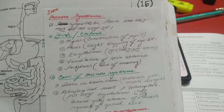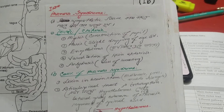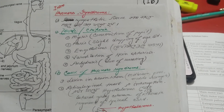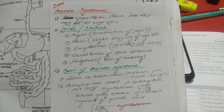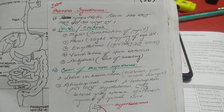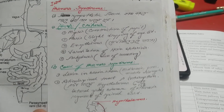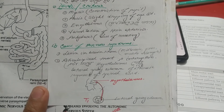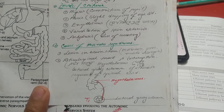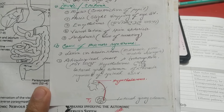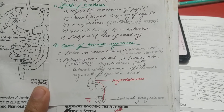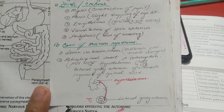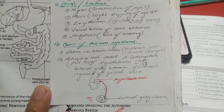Horner's syndrome features include miosis — constriction of the pupil — ptosis, vasodilation of the skin arterioles, and anhydrosis — loss of sweating. The lesion is located in the brainstem, affecting the reticulospinal tract.